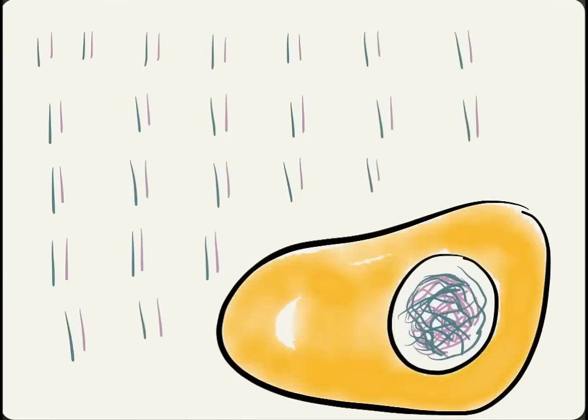We have 46 chromosomes, 23 from our mother, 23 from our father. They are found in the nucleus of almost every one of our cells.